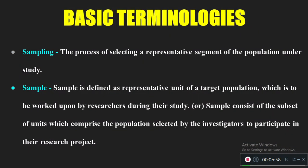Sampling is the process by which we select units from the population. It is the steps and procedure by which we recruit the sample from the population for our study. For example, from 10,000 people, I want to select 1,000 — those 1,000 people together are called the sample.